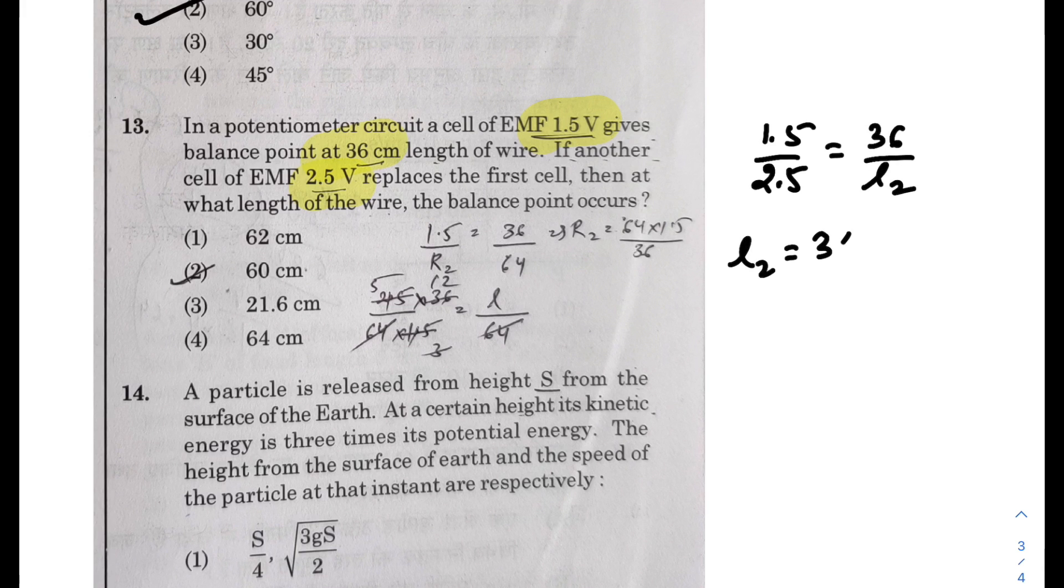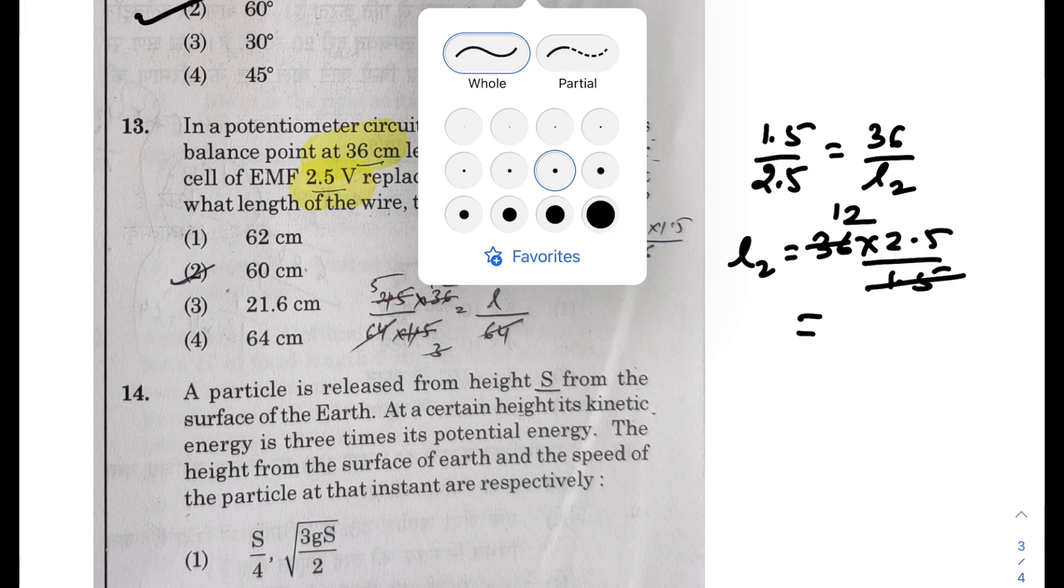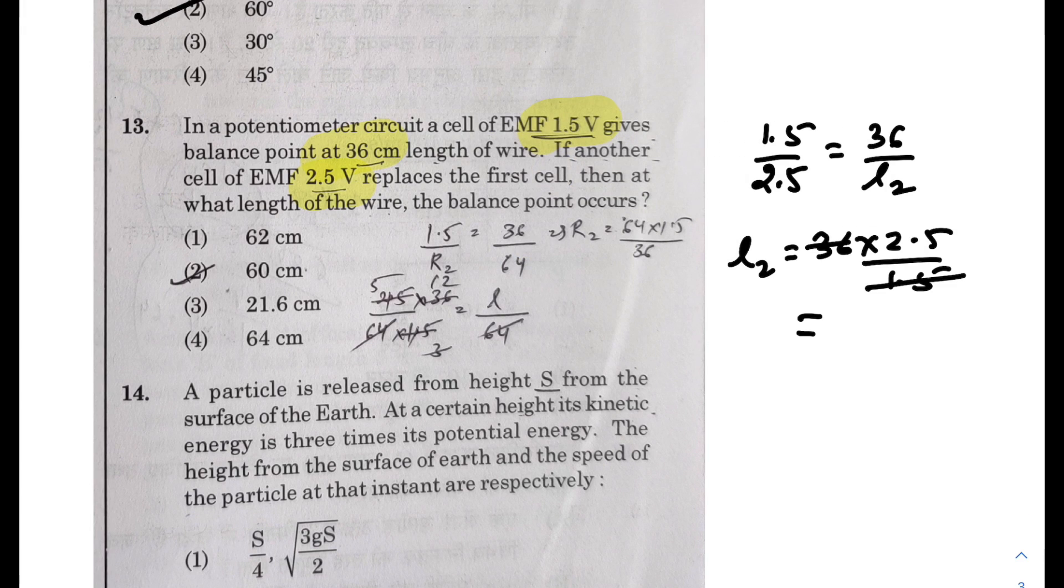So this L2 comes out as 36 into 2.5 over 1.5. So if you do this, it would be 24 times. So 24 into 2.5 that is equal to 60 centimeters. Second option is correct.